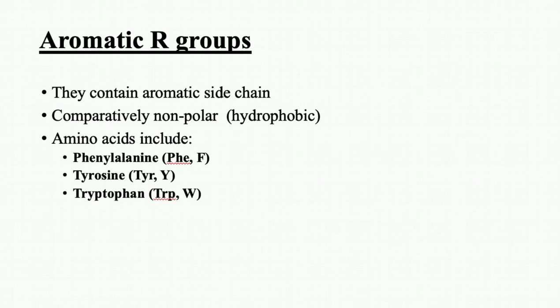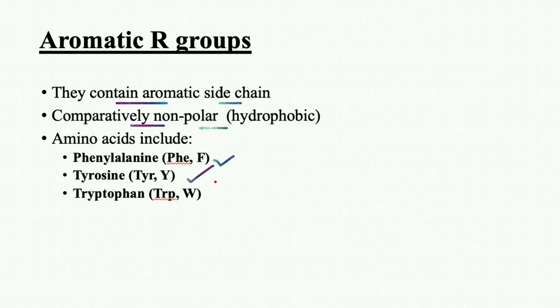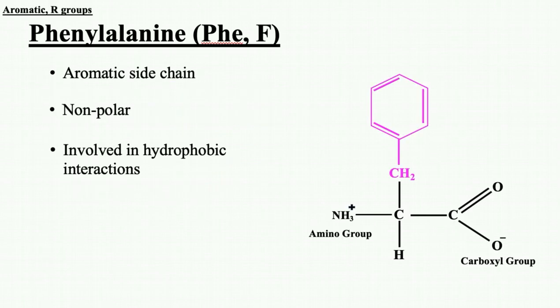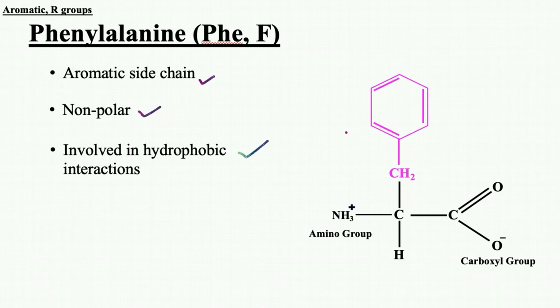The next class is aromatic R group-containing amino acids. In these amino acids the side chain contains an aromatic ring such as a benzene ring. They are comparatively non-polar and hydrophobic in nature. Amino acids in this class include phenylalanine, tyrosine, and tryptophan. Phenylalanine has a benzene ring with a CH2 group; the charge distribution is even across the benzene ring, so it does not interact with water and is involved in hydrophobic interactions.